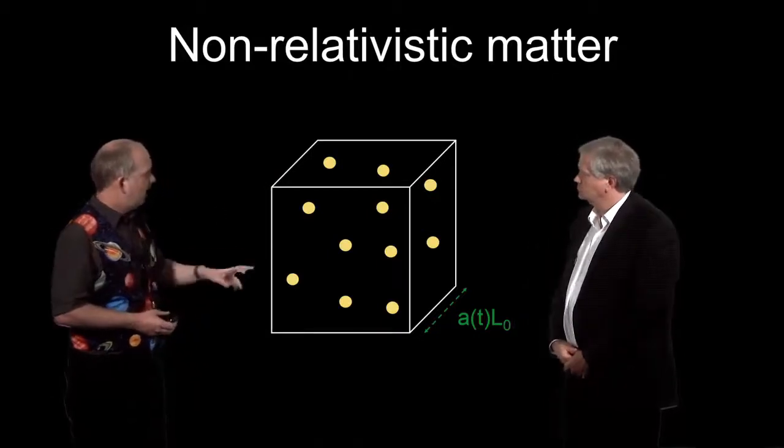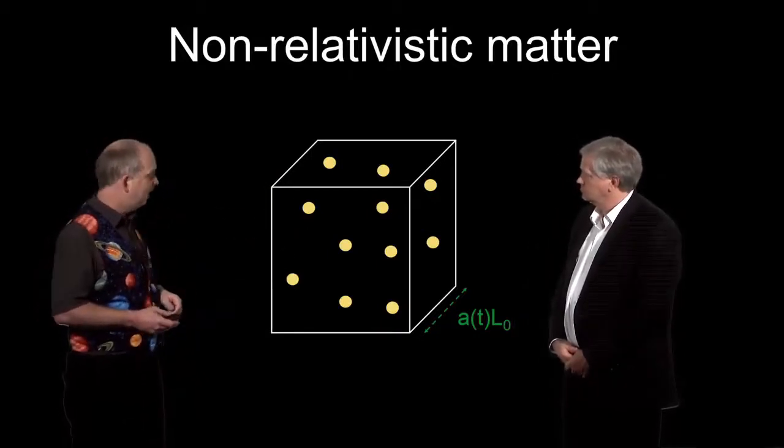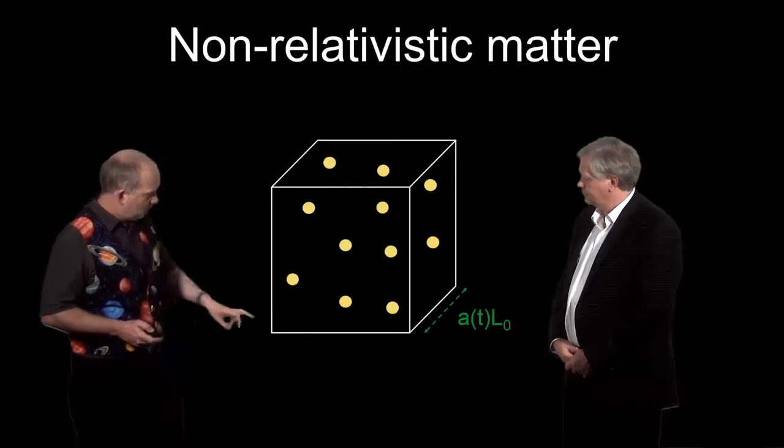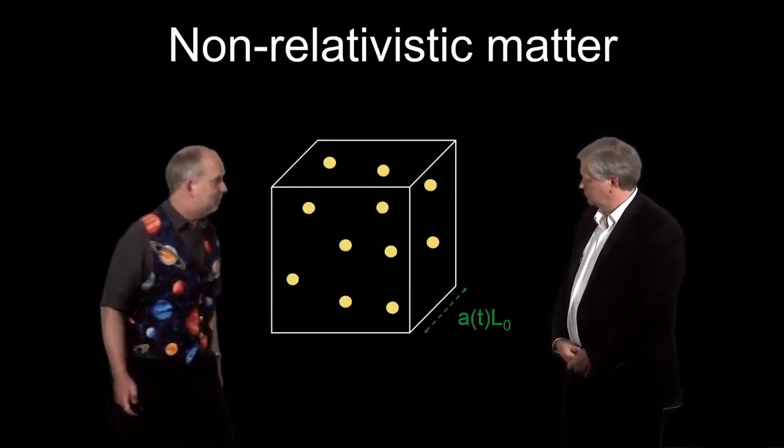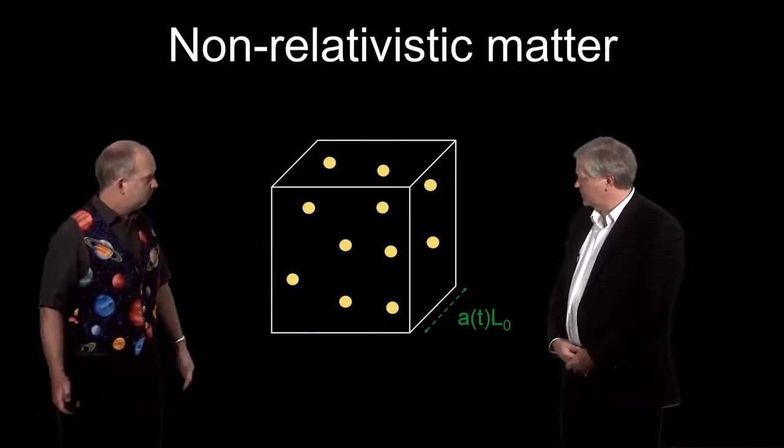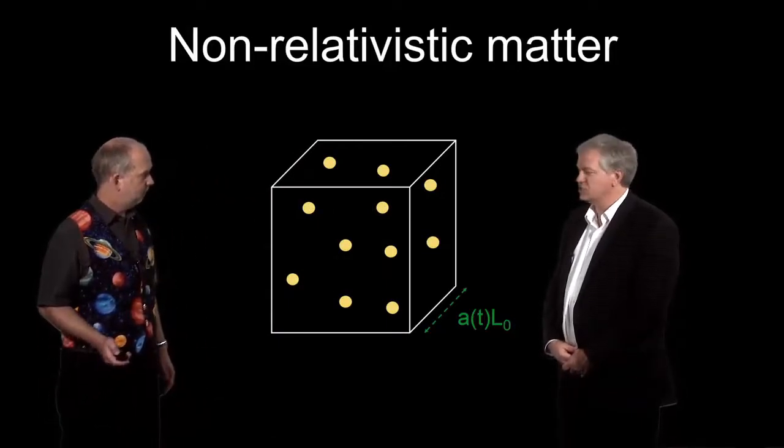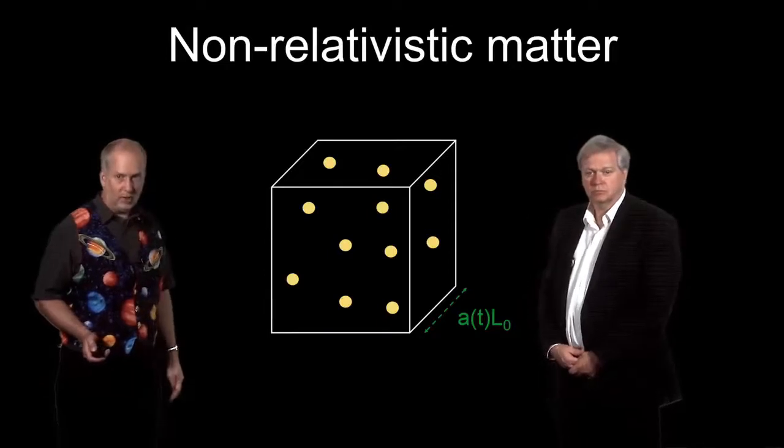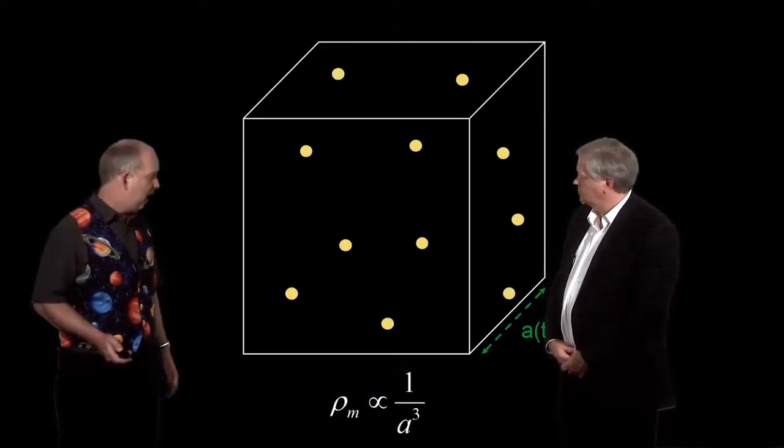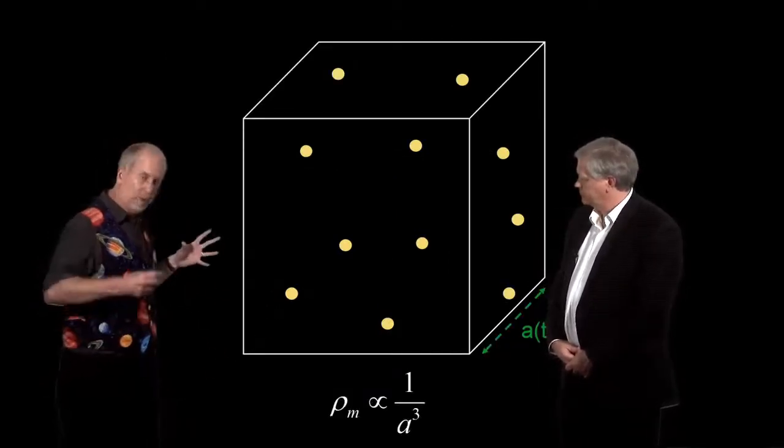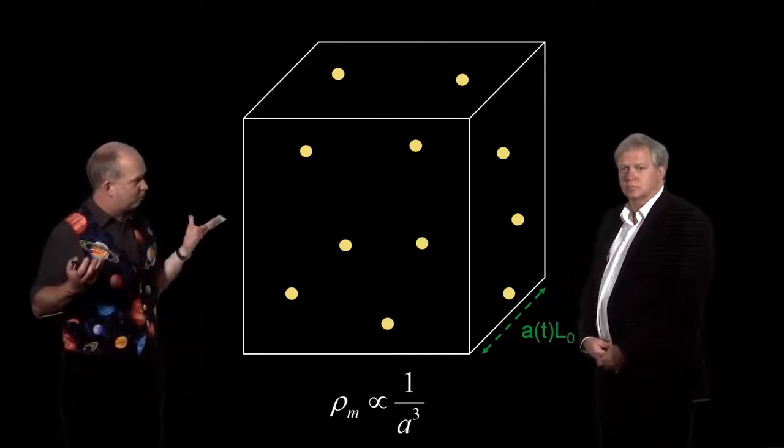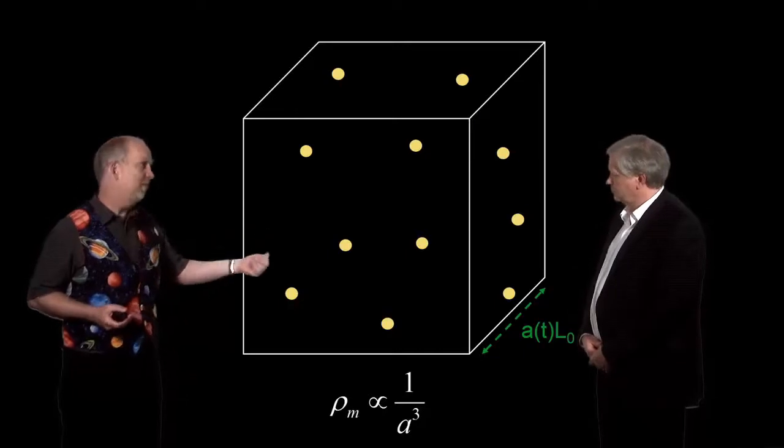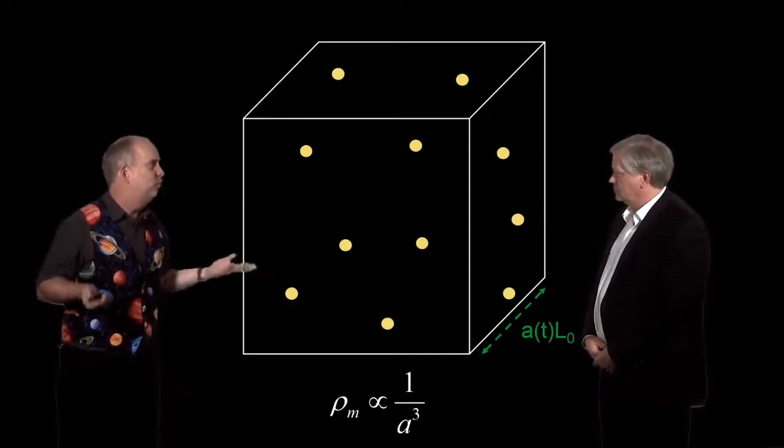In that case, you've got a box of given size, and it's got a certain amount of stuff in it. The length of each side is going to be its L₀ times A(t). As the universe gets bigger, every length is going to get bigger. The width, the height, and the depth of the box is going to get bigger. So the volume is going to go up as proportional to A³. But the amount of stuff inside the box isn't going to change, because we assumed conservation of matter.